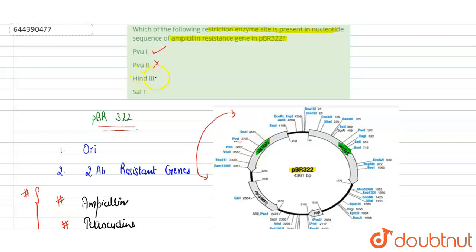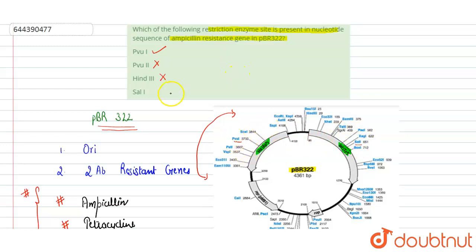The third option is HindIII. HindIII is also not present in the ampicillin resistance gene — if we check the restriction sites, HindIII is present somewhere in the region connecting the ampicillin and tetracycline genes, so that is also incorrect. The last option, SalI, is present in the tetracycline resistance gene, not in the ampicillin resistance gene, so this is also incorrect.